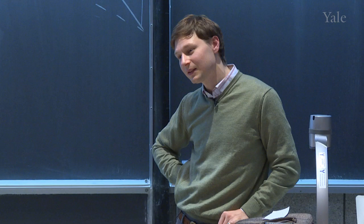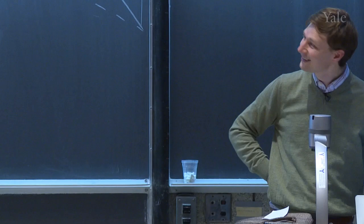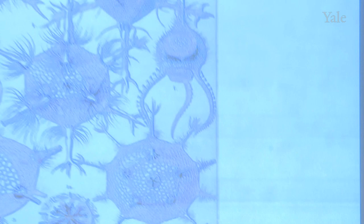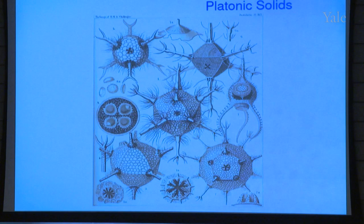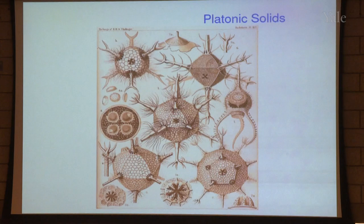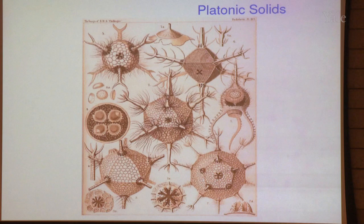Returning to the radiolaria: they live in the ocean, right here in our oceans — in the Atlantic Ocean. They are real animals; they're tiny, about one-tenth of a millimeter in diameter. If you look at them under a microscope they look just like those platonic solid shapes. It would be scary if they were very big, but they're tiny.